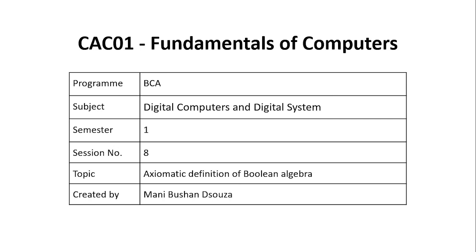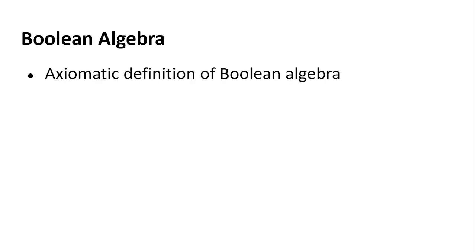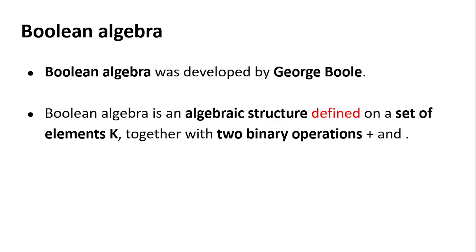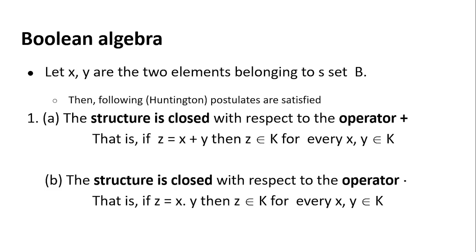Welcome to the 8th session on Fundamentals of Computers. I am Manibushan D'Souza and in today's class we are going to look at the axiomatic definitions of Boolean algebra — the axioms defined in Boolean algebra. Boolean algebra was developed by George Boole. It defines a structure consisting of a set of elements K and two operations: plus and dot. We consider two elements x and y belonging to set B, and according to the Huntington postulates, the following postulates are satisfied for Boolean algebra.